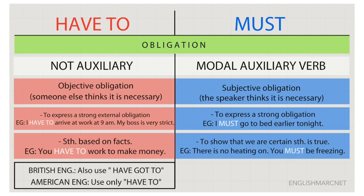So what is the main difference? As you can see, we have the red rectangle in 'have to' — it says 'objective obligation.' Someone else thinks it is necessary; it is usually based on a law. Somebody else tells you you have to, or you don't have to, do it. For example, in some schools you have to wear a uniform — that is an objective obligation. 'Must,' instead, is a subjective obligation — the speaker thinks it is necessary. For example, I can say 'I must learn Italian' — I tell myself to do it.